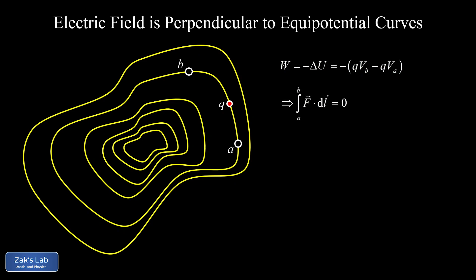So viewing the calculation of work as an integral of F dotted into DL along the path as we go from A to B, we see that the integral of F dotted into DL is equal to zero. But remember the electric force is given by Q times E. So we have the integral of QE dotted into DL is equal to zero.